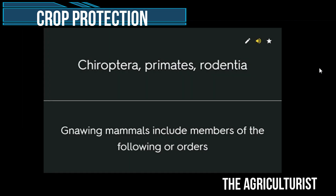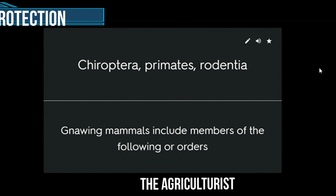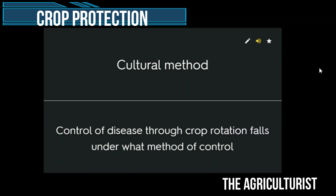Chiroptera, primates, rodentia — nine mammals include members of the following orders. Quarantine control — the control action that prevents introduction of potential pests to another area or prevents further dissemination of those already present in the locality.